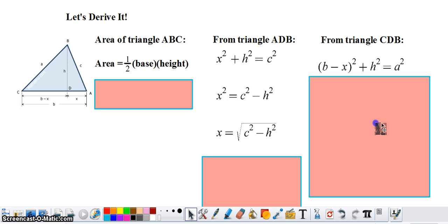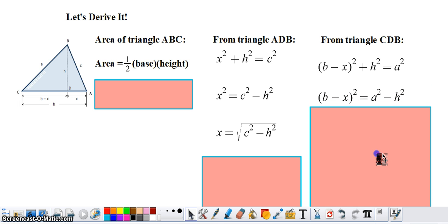Now I want you to extend the left side of this equation. Doing this, we have b minus x squared equals a squared minus h squared. B squared minus 2bx plus x squared equals a squared minus h squared.